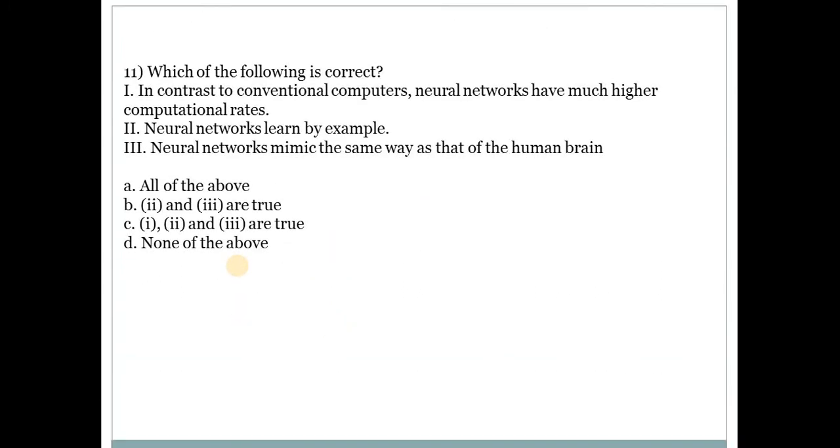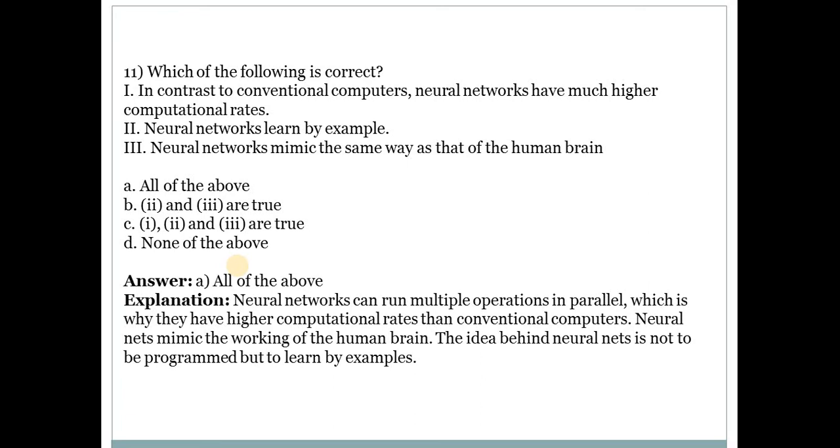Next question is: Which of the following is correct in the below statements? Answer for this is A, that is all of the above. Number 1 statement: In contrast to conventional computers, neural networks have much higher computational rates, which is true. Number 2: Neural networks learn by example, this is also true. Number 3: Neural networks mimic the same way as that of the human brain, this is also true. So here, answer is A, that is all of the above are true.